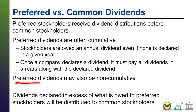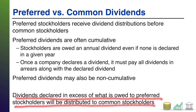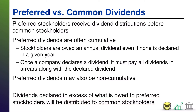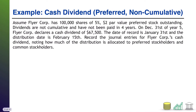However, preferred dividends may be non-cumulative, and that's going to be the topic of this video — the ones that don't get that backlog. You get a dividend if it's declared, and if it's not declared, you just don't get one for that year. Once the preferred shareholders are paid out, any dividends declared in excess of what was owed to the preferred stockholders get distributed to the common stockholders.